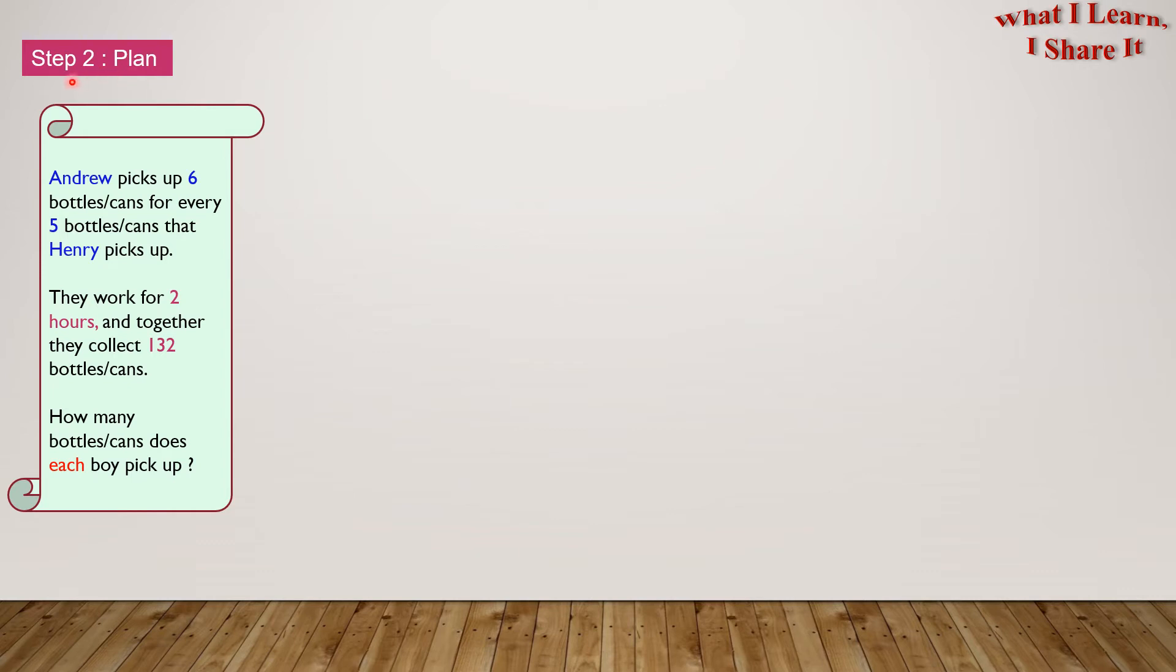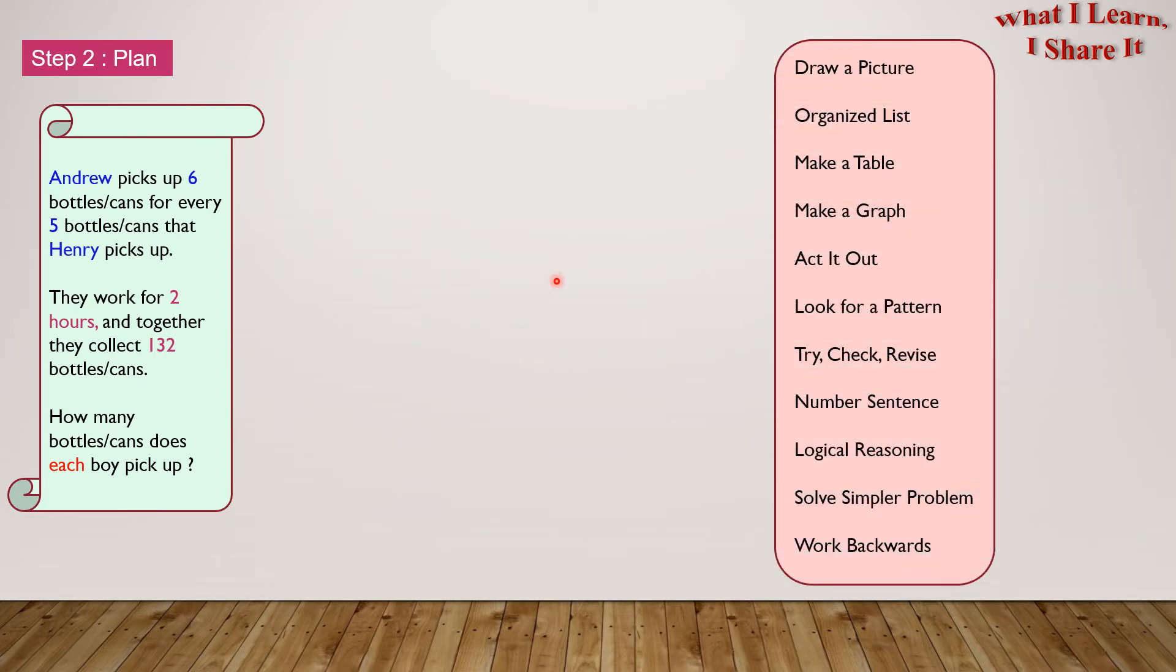Step 2. Plan. Now, let's think about the strategies. Here are all the strategies. I have made a video for each of them. There's draw a picture, organize list, make a table, make a graph, act it out, look for a pattern, try check revise, number sentence, logical reasoning, solve a simpler problem, and work backwards. I'm going to use make a table.